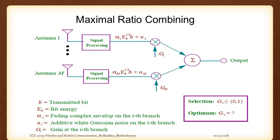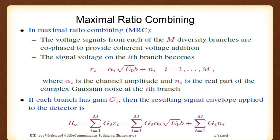Let us look at this basic MRC diagram. We will just follow the equations and compare with selection diversity. The signal voltage on the ith branch: the voltage signals from each of M diversity branches are co-phased to provide coherent voltage addition. Co-phasing and summing is one important block within MRC. If all signals are coherent, the signal voltage on the ith branch is given by R_i equals alpha_i times square root of E_b plus noise N_i. Alpha is the channel amplitude and N_i is the real part of the complex Gaussian noise.